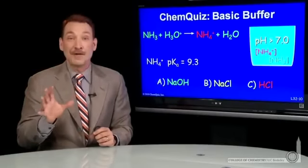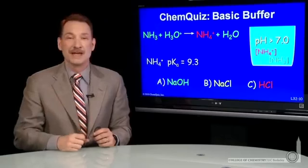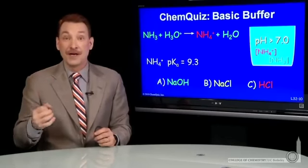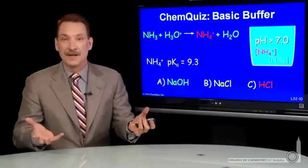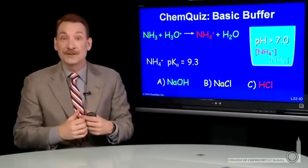We're talking about making a buffer from NH3, ammonia, the weak base. Now, to make a buffer, you need a base and its conjugate acid, or an acid and its conjugate base. They need to be in about equal concentrations.